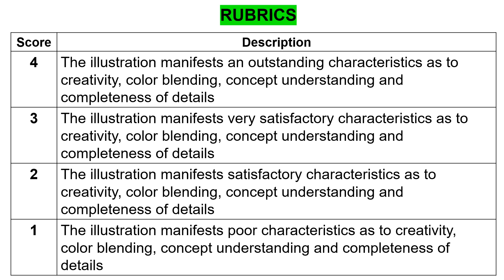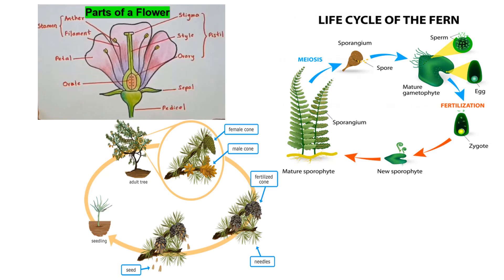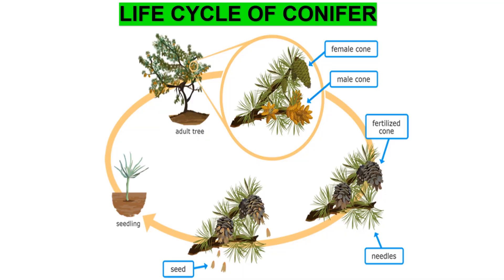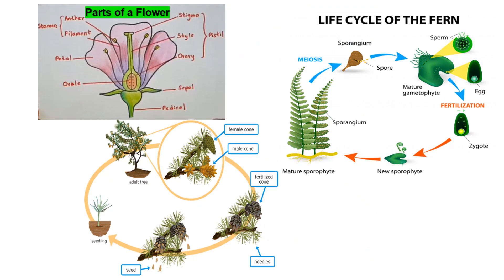If the illustration manifests poor characteristics as to creativity, color blending, concept understanding, and completeness of details, you will still get 1. Okay, so you may now begin. Just have fun.